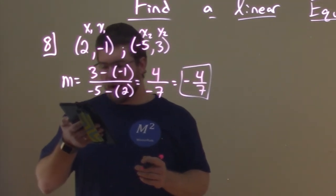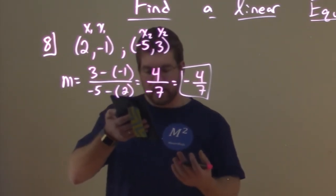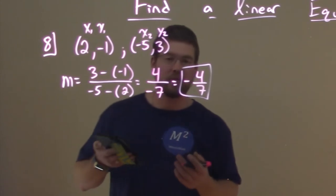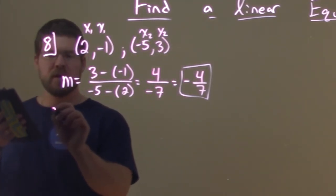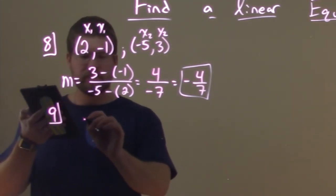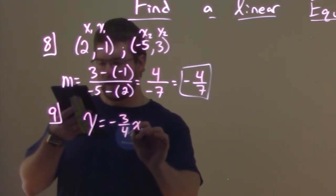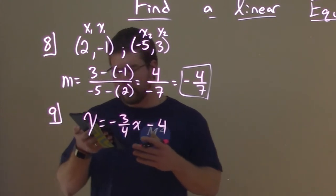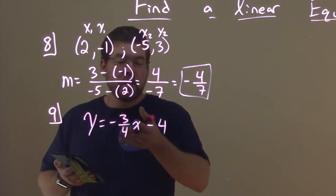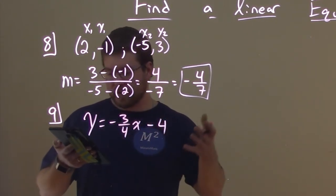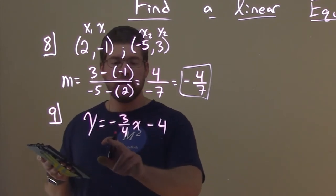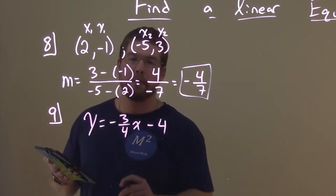So we now know how to find the slope between two points. So what about identifying the slope and Y-intercept given an equation? Let's try that with number 9. Let's say I was given this equation, Y equals negative 3 fourths X minus 4, and we want to find the slope and Y-intercept. Well, this right here is what we call slope-intercept form. We have Y equals MX plus B.